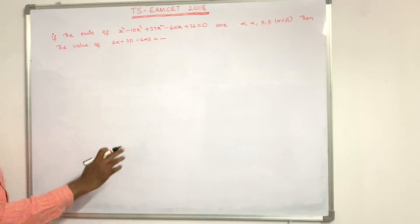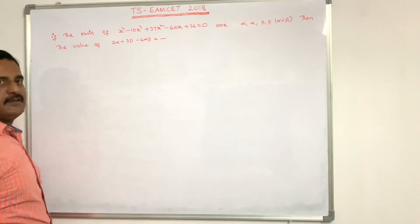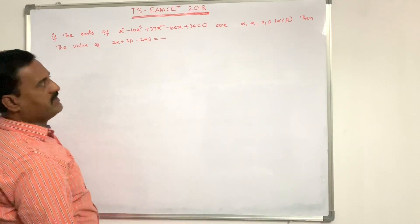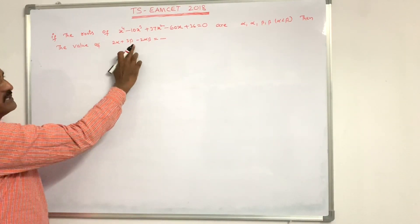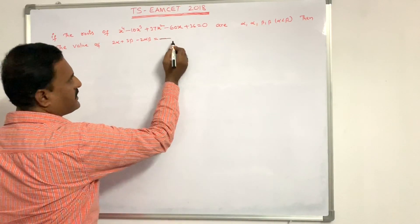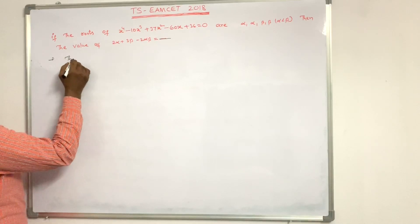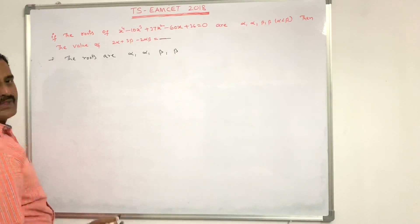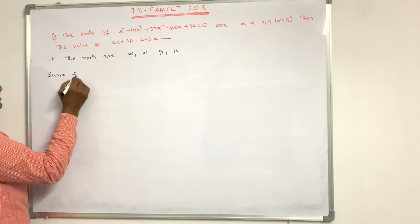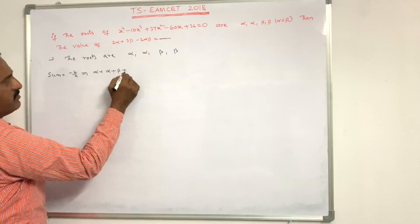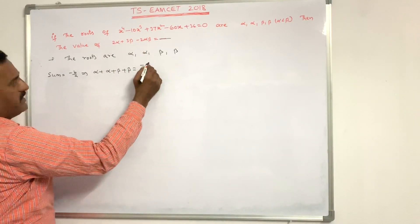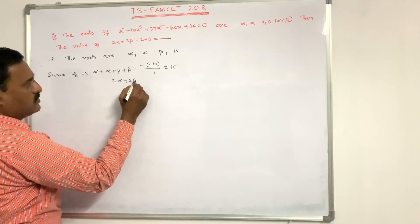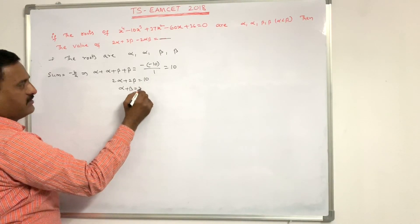If the roots of x⁴ - 10x³ + 37x² - 60x + 36 = 0 are α, α, β, β with α < β, find the value of 2α + 3β - 2αβ. First, the sum of roots: α + α + β + β = -b/a = 10, so 2α + 2β = 10, giving α + β = 5.